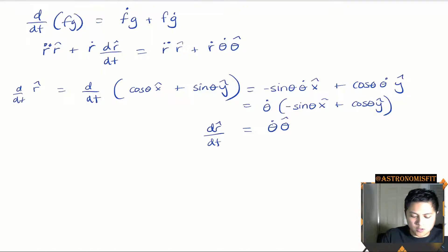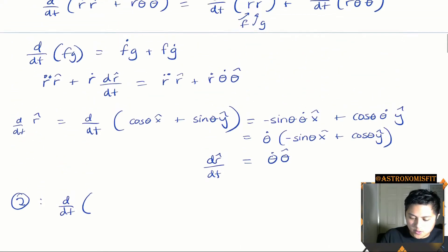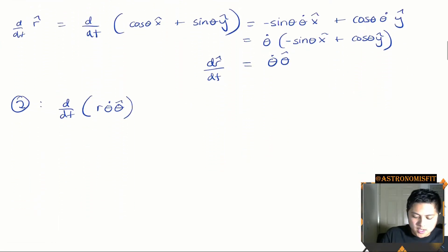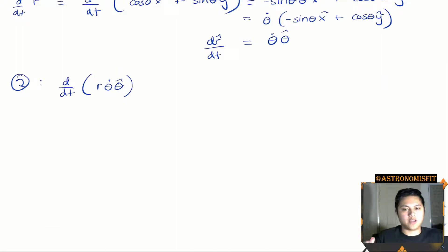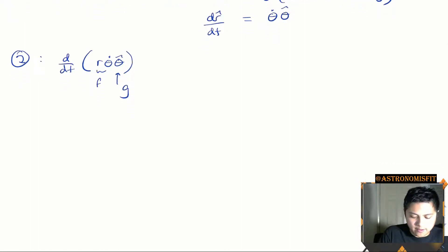Now moving on to term two, which is the derivative of r times theta-dot times theta-hat. In this case we have three terms that all depend on time, so we're going to have to use two product rules. Let's call r times theta-dot as f and theta-hat as g. Applying the same logic, we get the time derivative of (r times theta-dot) times theta-hat plus r times theta-dot times d(theta-hat)/dt.